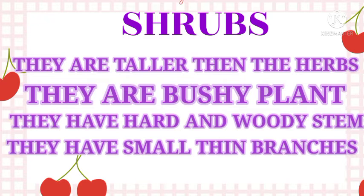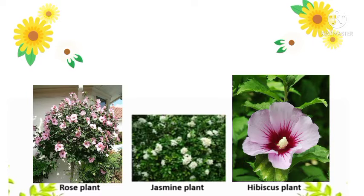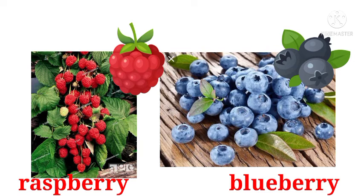Shrubs: They are taller than herbs. Shrubs herb se taller hote hain. They are bushy plants. Shrubs ghani plants hote hain. They have hard and woody stems. Shrub ki stem bahut mazboot aur lakdi ki bani hoti hai. They have small thin branches. Shrubs ki branches small aur patli hoti hain. Examples for shrubs are rose plant, jasmine plant, hibiscus plant, raspberry, and blueberry.